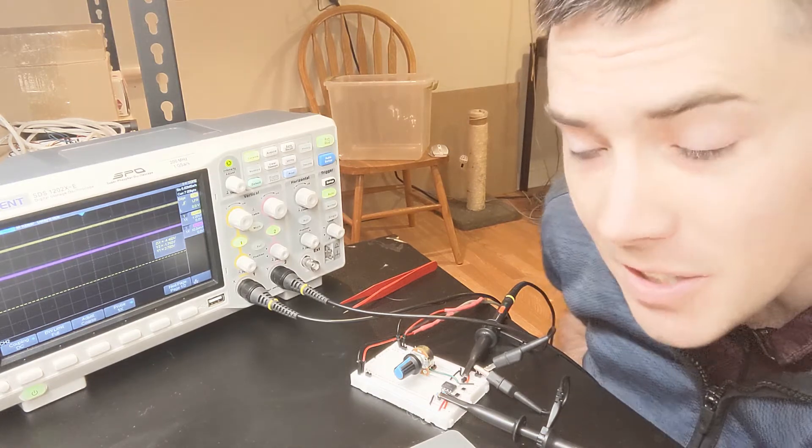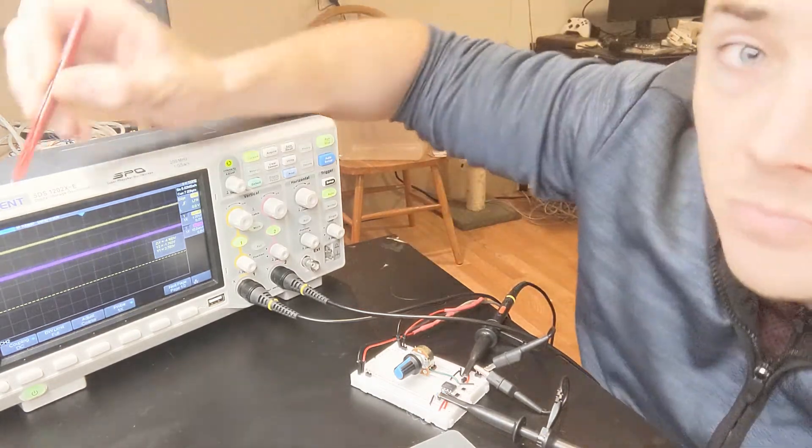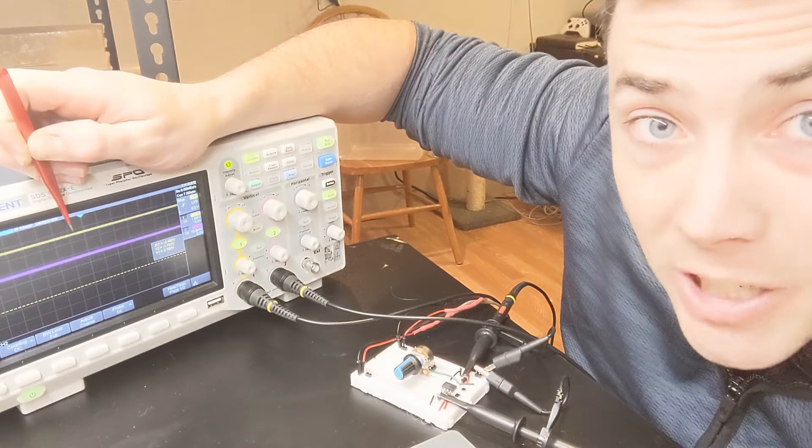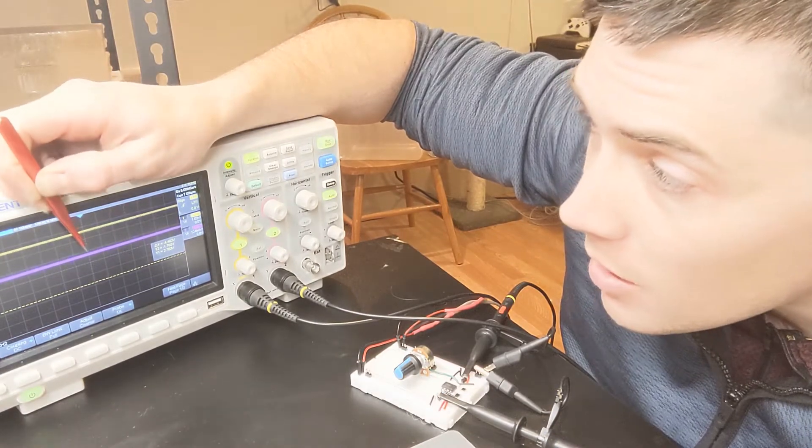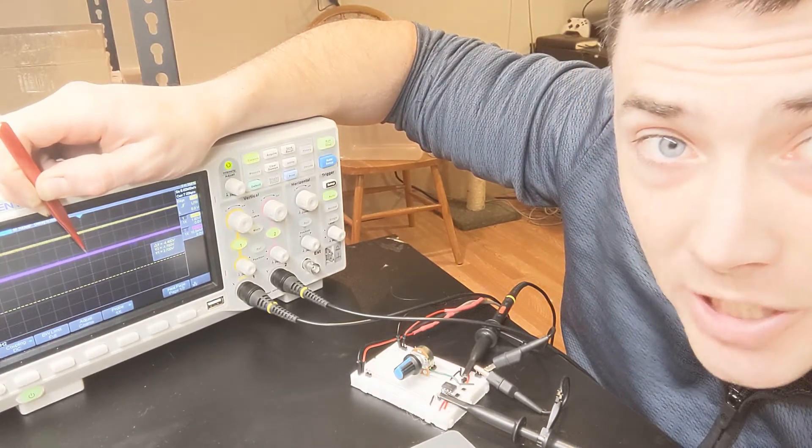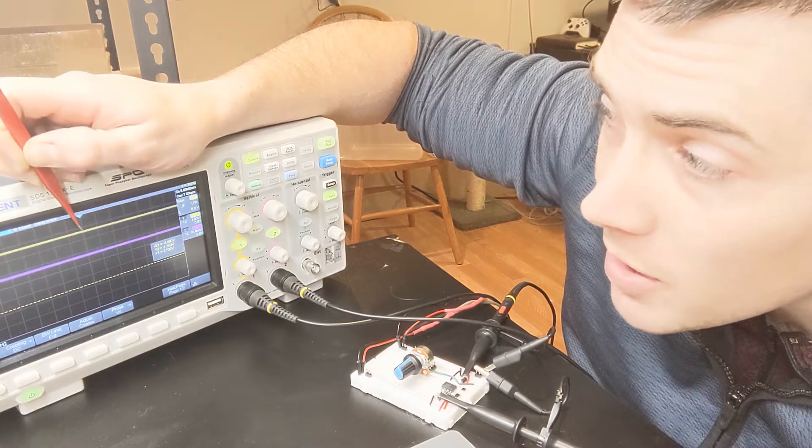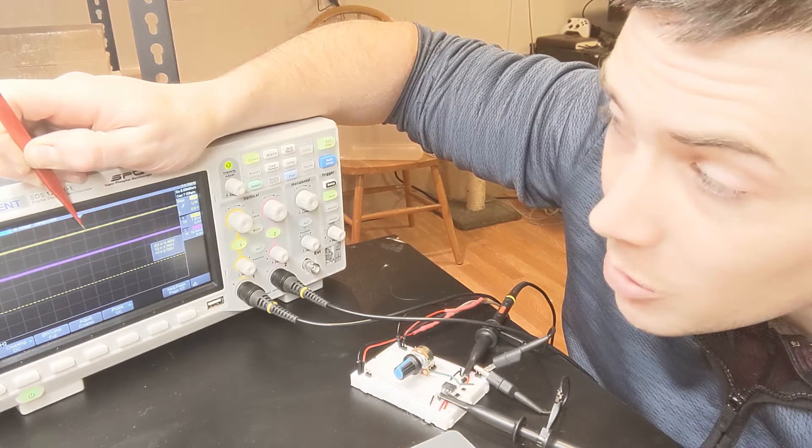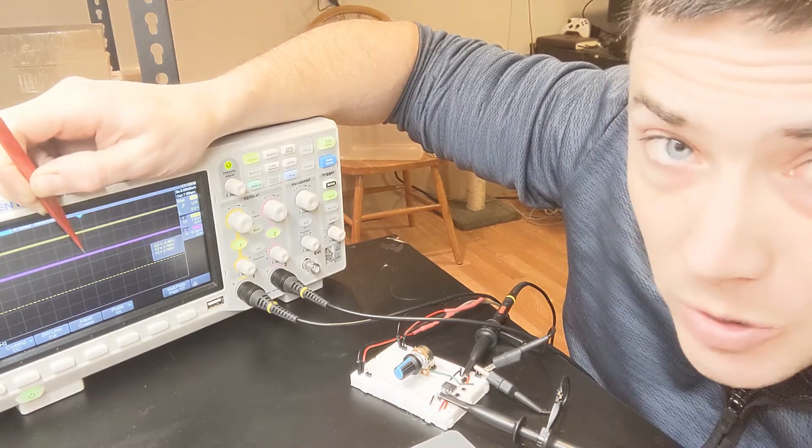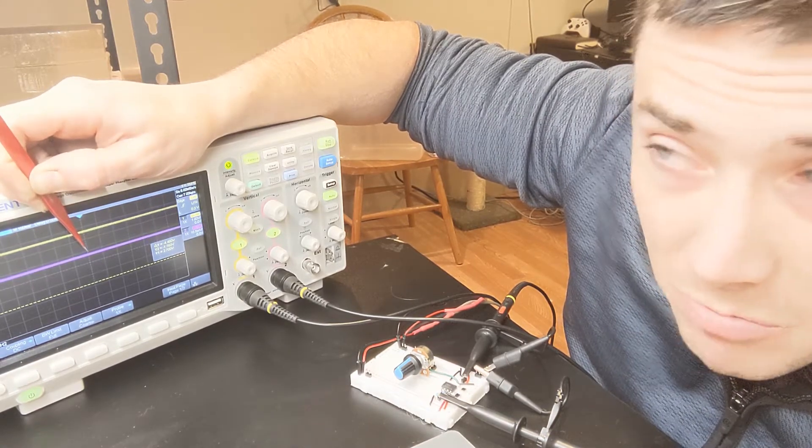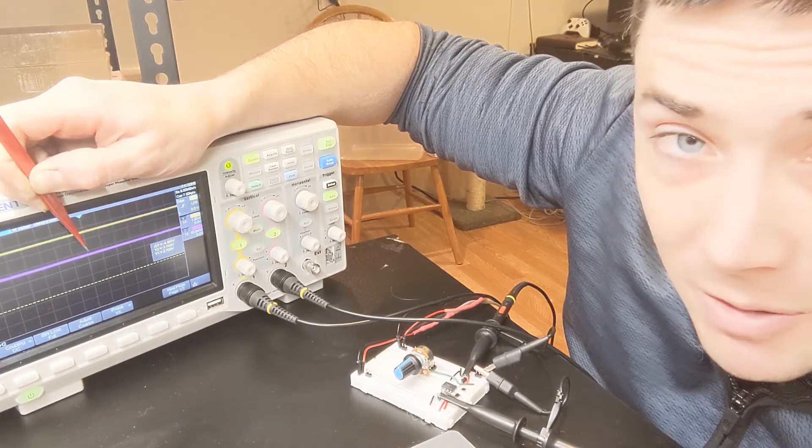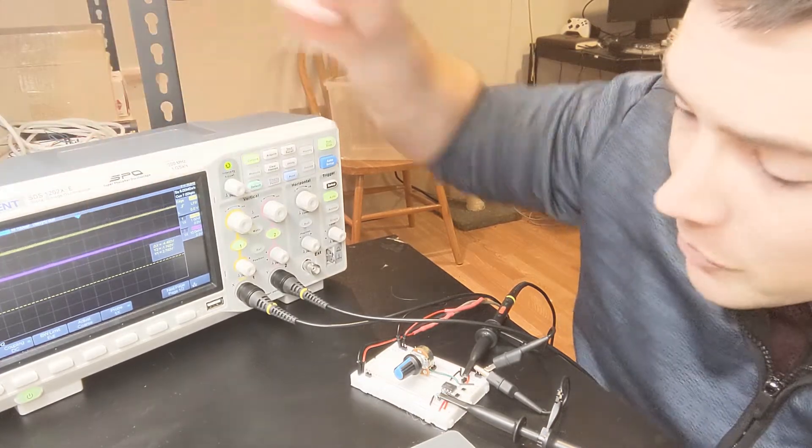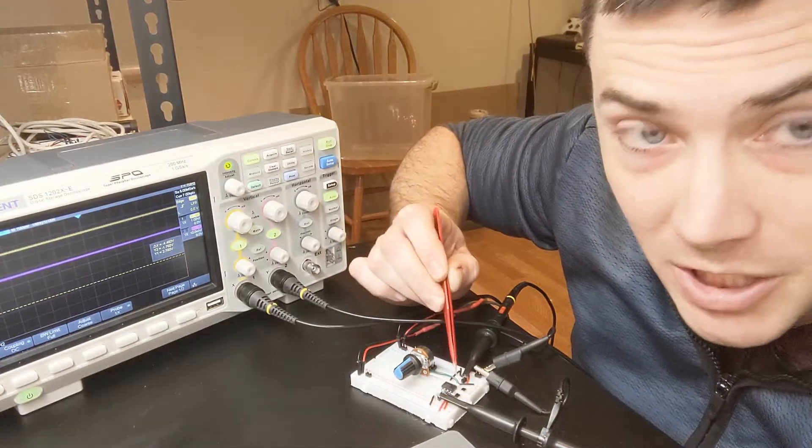As we can see on the oscilloscope over here, the yellow trace is channel 1, the purple trace is channel 2. Channel 1 is the variable resistor photodiode amplifier. Channel 2 is a fixed resistor, fixed gain photodiode amplifier, and I have both of them attached here.